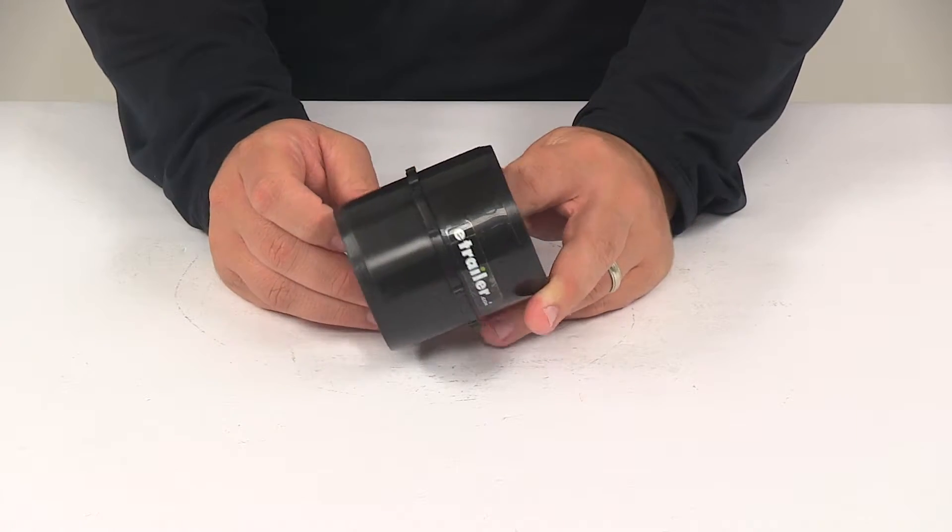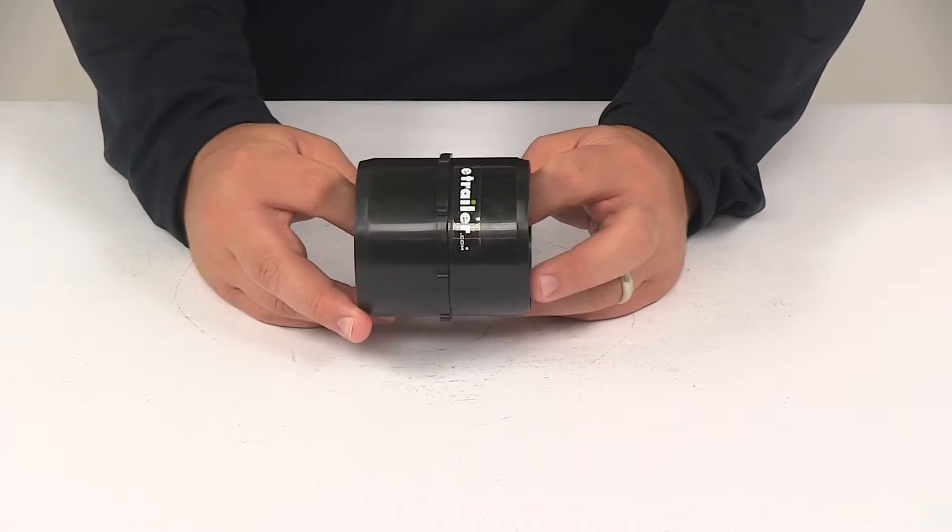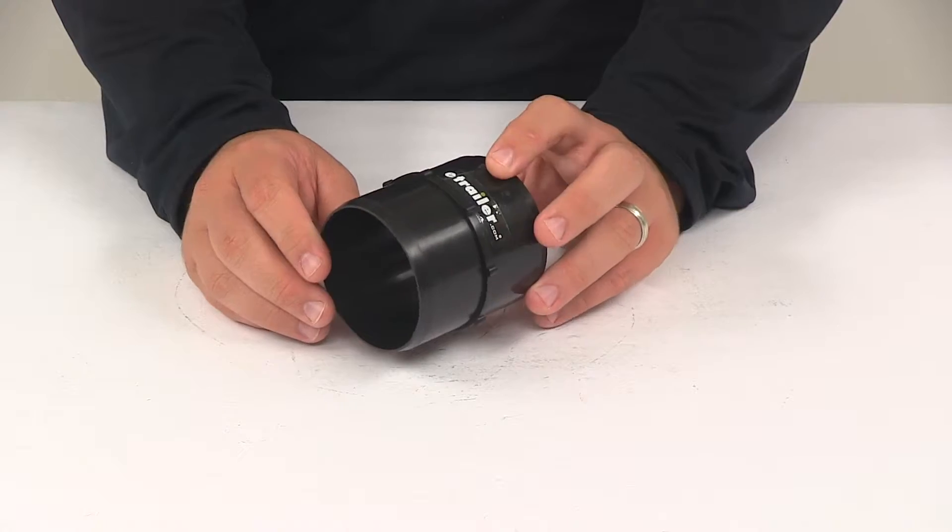It's made from a durable black plastic construction. It's designed to fit all three inch sewer hoses and it's small enough so it can be stored inside of a four inch RV bumper.